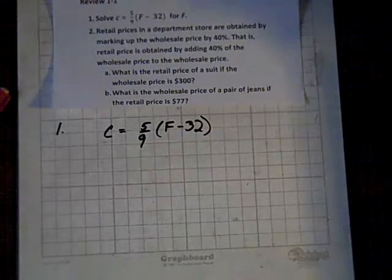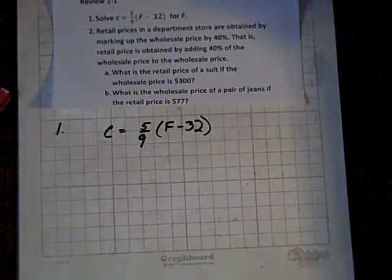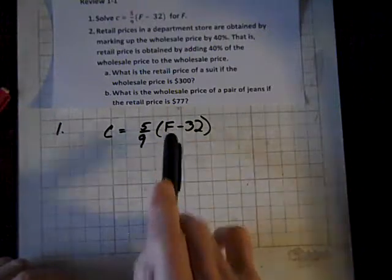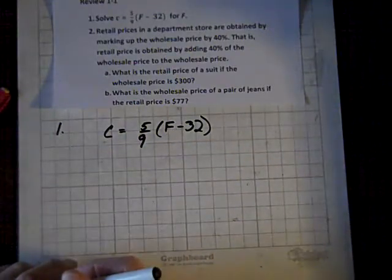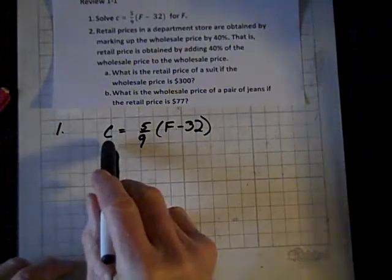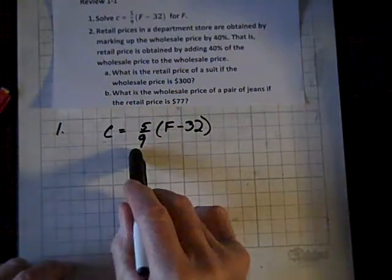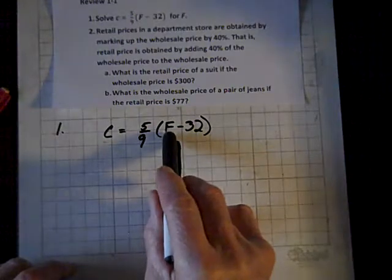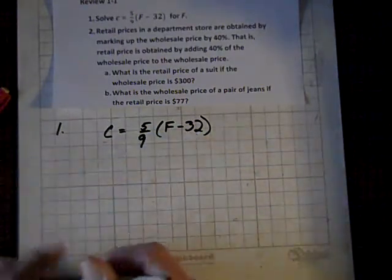Well, now we're doing section 1-1, the review, and it says to take this equation and isolate F. Okay, and by the way, this is the temperature in Celsius equals 5 ninths times the difference of the temperature in Fahrenheit and 32.